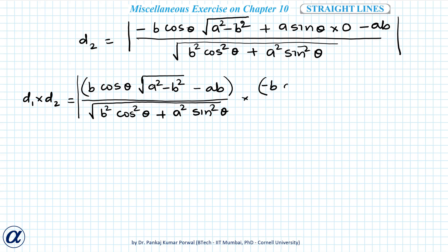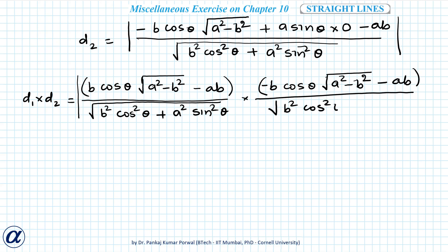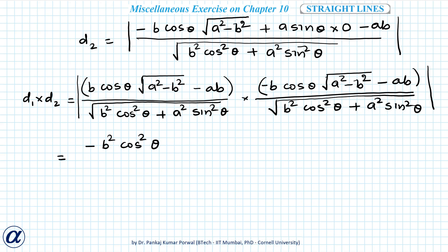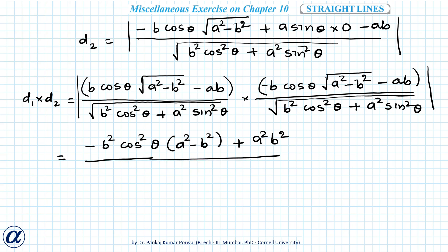Expanding the numerator using (A−B)(−A−B) = −(A+B)(A−B) = −(A²−B²), this gives: −b²cos²θ·(a²−b²) + a²b², divided by (b²cos²θ + a²sin²θ)², since the denominator is the square root of the same expression multiplied twice.